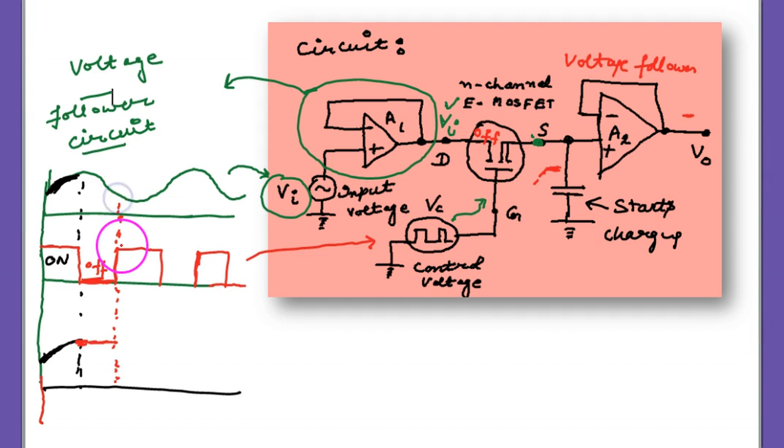Now next, again the square wave comes. And when the switch becomes on, the same type of voltage passes through the switch. And A2 also allows it to pass. So ultimately the output becomes like this.